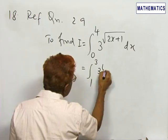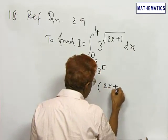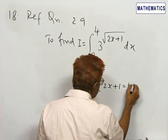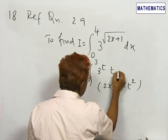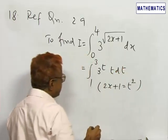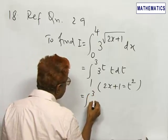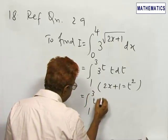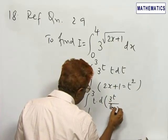3 power t by log 3, where we substitute 2x plus 1 is equal to t squared. So dx becomes t dt, and this is the integral 1 to 3 of t times d of 3 power t by log 3.